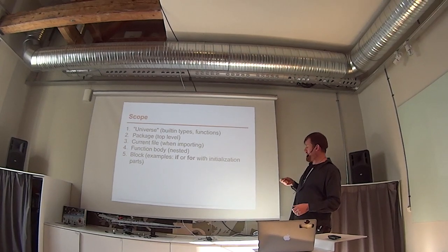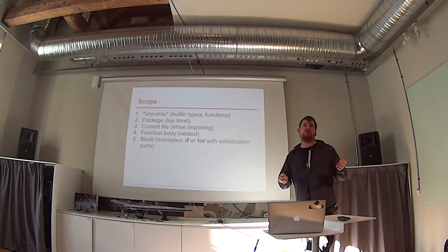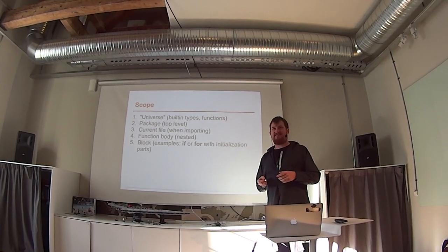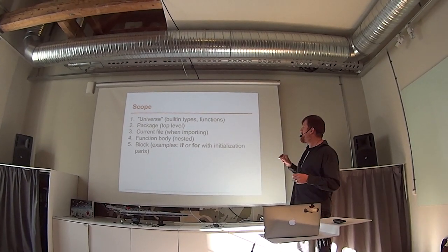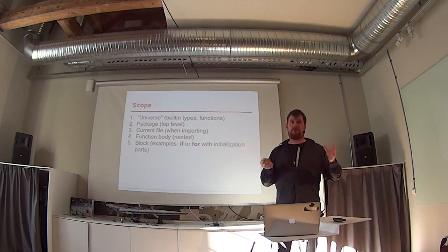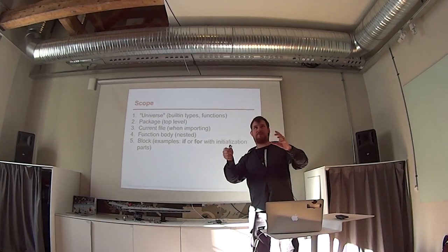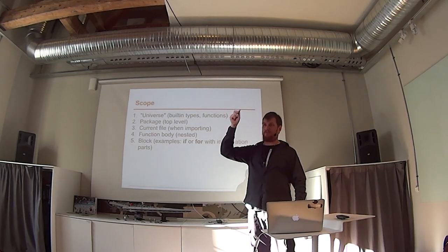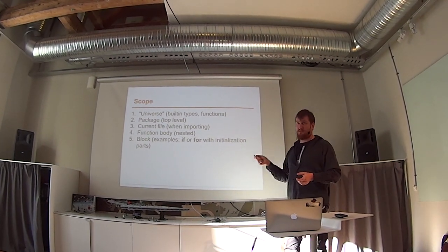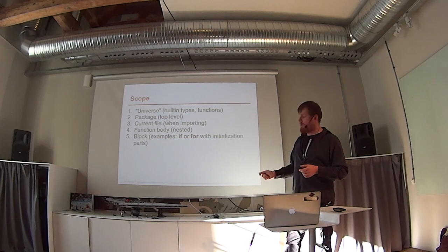General rules for scope: the universe level contains things that are built-in to the language, like integer and other types, plus built-in functions like make and append. Then you have the package level, where you define variables or types outside any function — those are available throughout the package. Then you have the current file scope, used when importing, because when you import another package, you don't want that to clutter up other files in the same package. So the import is just for that file. Then you have the function body — which is nested since functions are first-class citizens, to whatever depth you want. And then you have the block, as shown before with if and for statements.